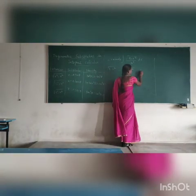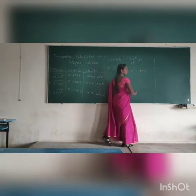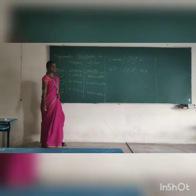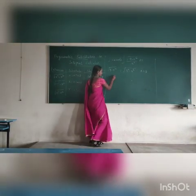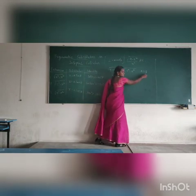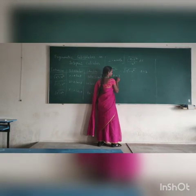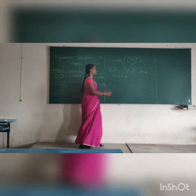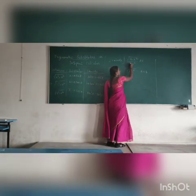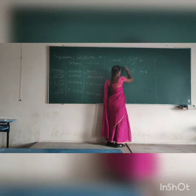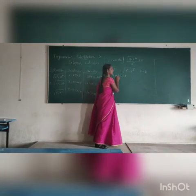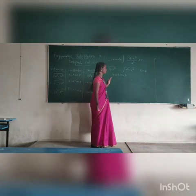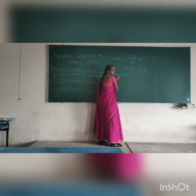So in this case we have to substitute x equal to a sin theta, and here a value is 3, so x is equal to 3 sin theta. Now we know the numerator part: root of 9 minus x squared, with x equal to 3 sin theta. And we need to find the dx value.